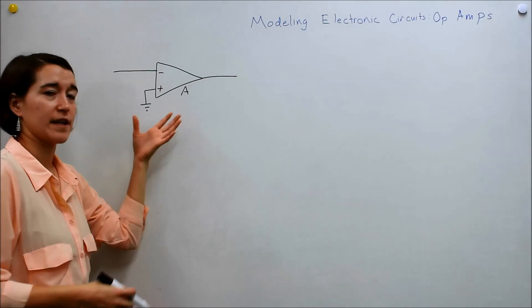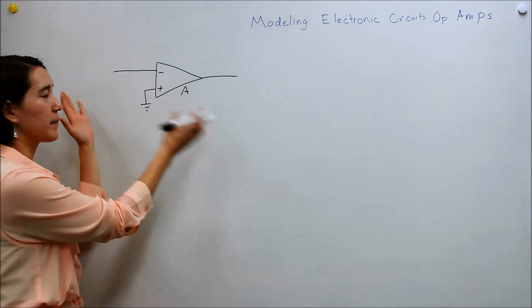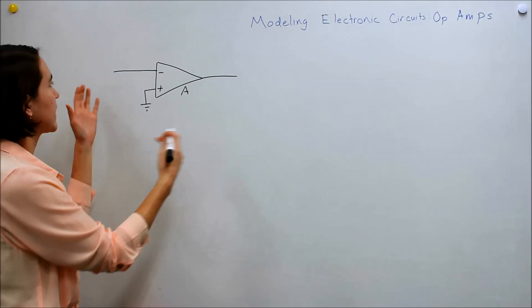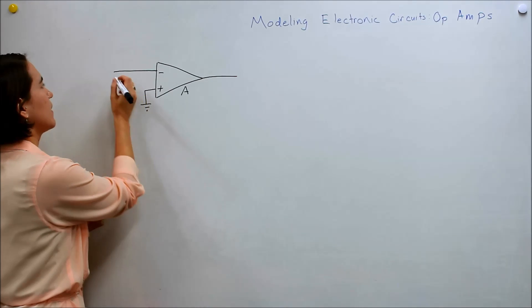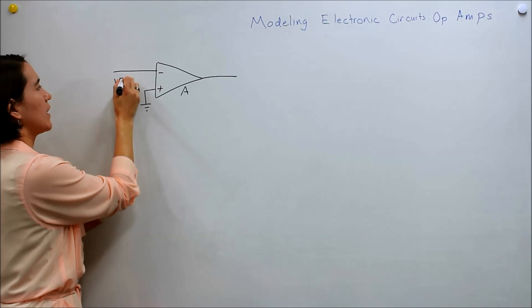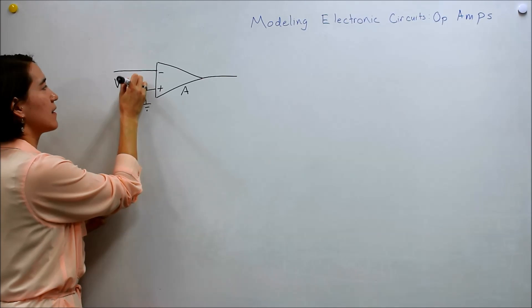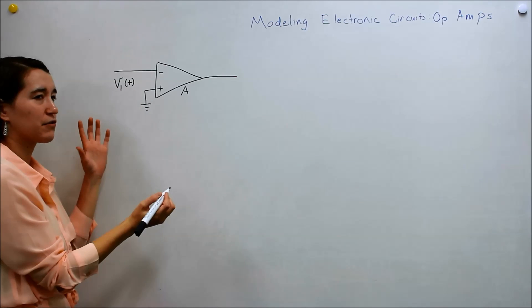So we're going to look at first an inverting op amp. And so this is our basic op amp, if you remember. And let's give some of these values a name. So we're going to say that the input here is V1 of T. So this is the input signal.